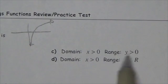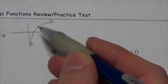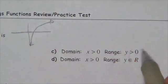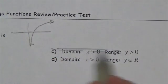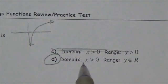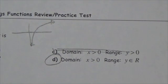See, it couldn't be this option because I can see from my sketch that the graph goes below the x-axis where y is 0. So it can't be this one. It's got to be this one: domain x greater than 0, and the range is all real numbers. That's the answer.